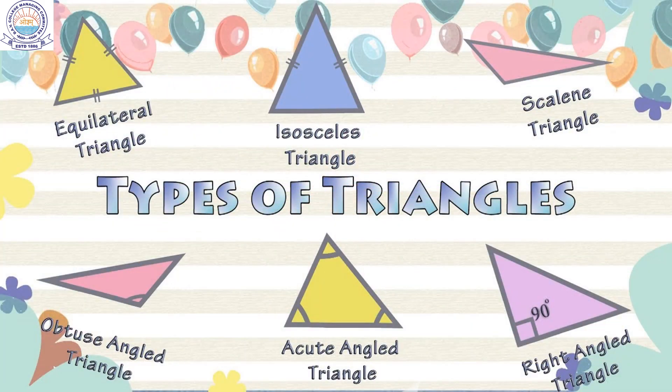The different types of triangles are classified according to the length of their sides and the measure of the angles. On the basis of side lengths, the triangles are classified into: equilateral triangle, isosceles triangle, and scalene triangle.